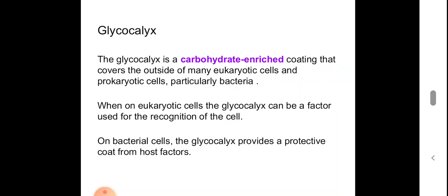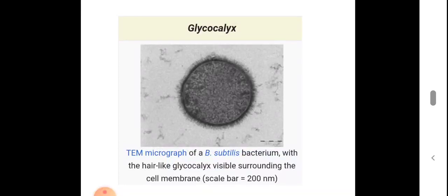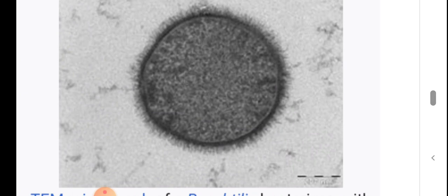Glycocalyx is present in most bacteria, where it provides a protective coat from host factors — that is, the host immune system or host digestive enzymes — offering protection to the bacteria. This is a transmission electron micrograph of Bacillus subtilis bacterium, with hair-like glycocalyx visible surrounding the cell membrane.